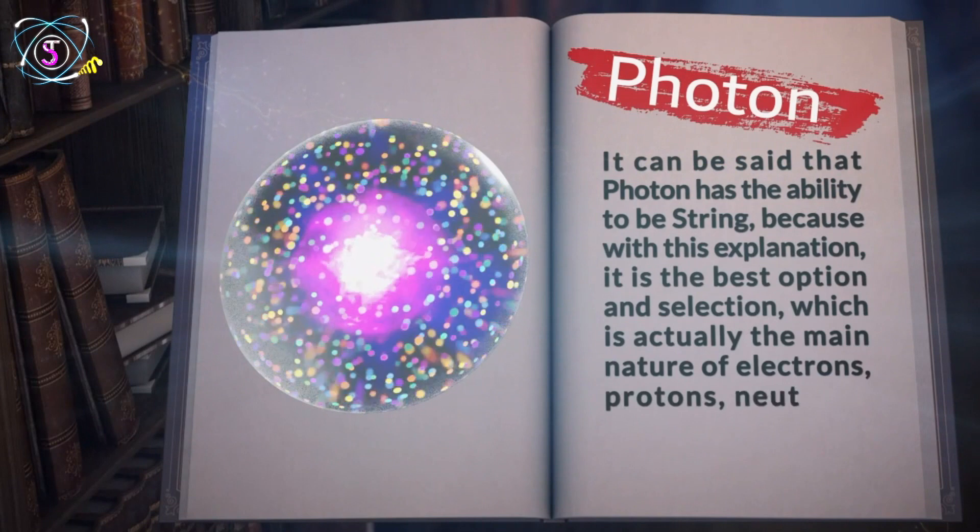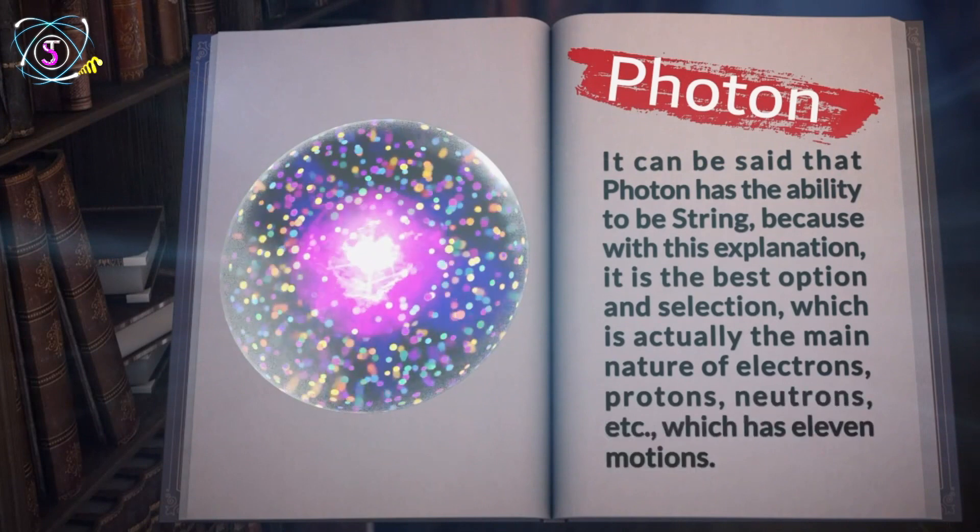It can be said that photon has the ability to be string, because with this explanation, it is the best option and selection which is actually the main nature of electrons, protons, neutrons, etc., which has 11 motions.